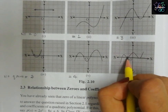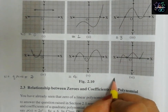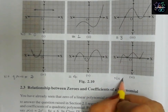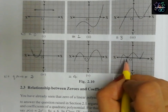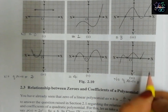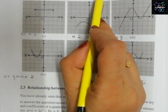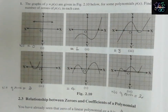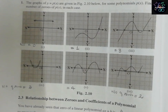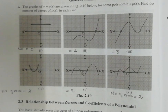In the last graph, the graph intersects the x-axis at two points, so the number of zeros is equal to two. This completes exercise 2.1. In my next video I am coming up with the next exercise, so do like, share, and subscribe to my channel. Thank you.